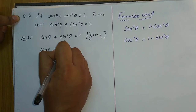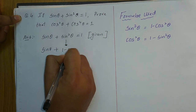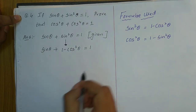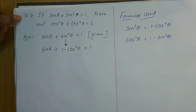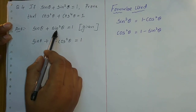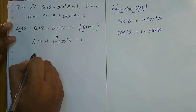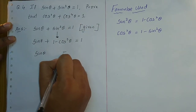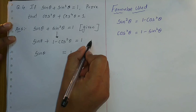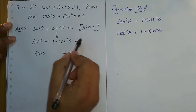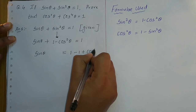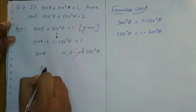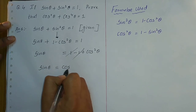From sin θ + sin²θ = 1, we get sin θ = 1 - sin²θ. Since sin²θ + cos²θ = 1, we have 1 - sin²θ = cos²θ. So sin θ = cos²θ.